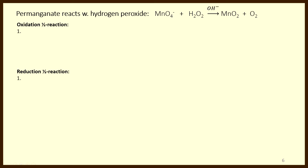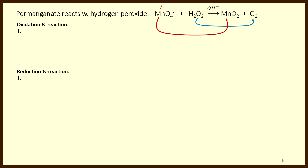Our second example: permanganate reacts with hydrogen peroxide. Note that this reaction is carried out in basic solution — see the OH⁻ above the reaction arrow. Let's figure out what's being oxidized and what's being reduced by calculating the oxidation numbers of the atoms involved.